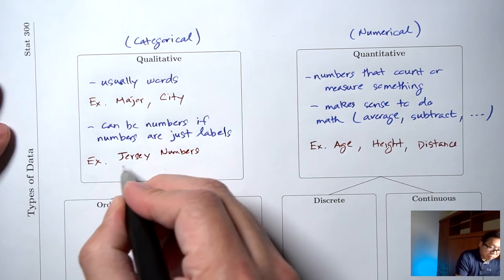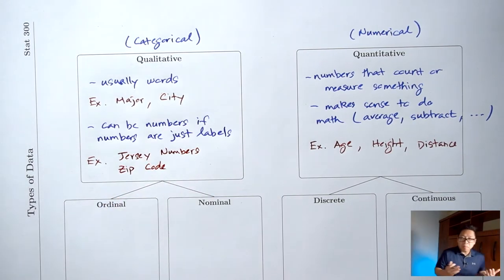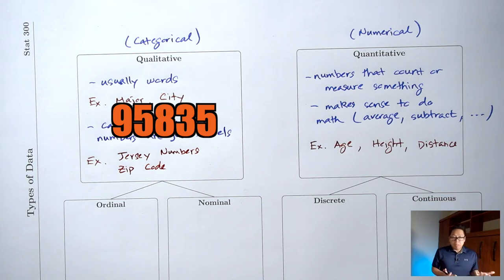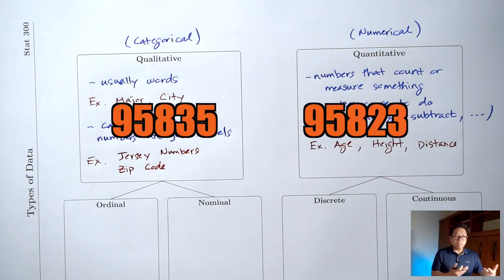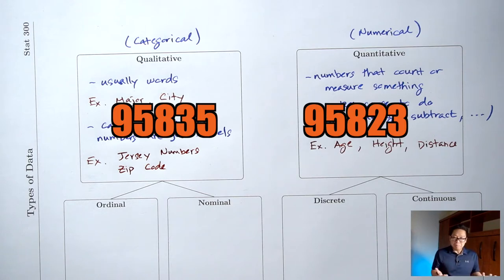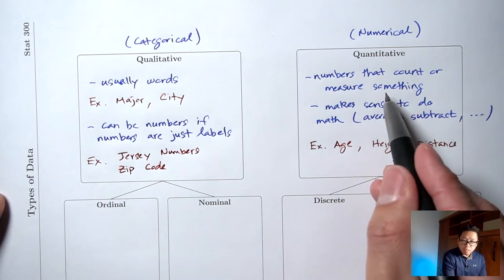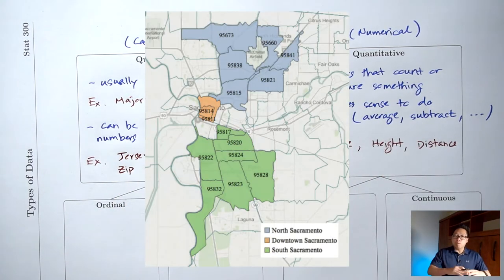Another example: your zip code. I live in 95835, and CRC is in 95823. Does that count or measure anything? No. If I subtract those two zip codes I get 12 — does that mean I live 12 miles away from CRC? I know for sure that's not true. So zip code is an example of a number, but it doesn't count or measure anything, which means we're going to call it qualitative because it's just a label for an area.